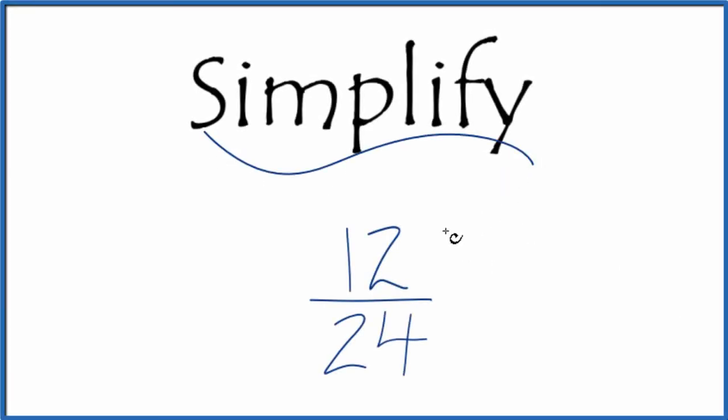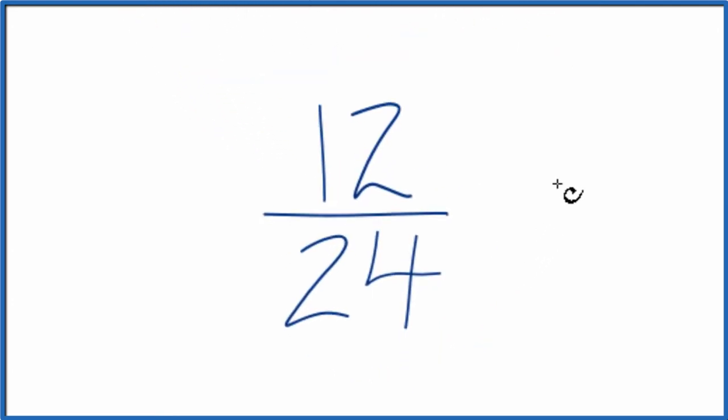If you need to simplify the fraction 12 24ths, here's how you do it. What we're trying to do is find another fraction that's equal to 12 24ths, just that it's in lowest terms.